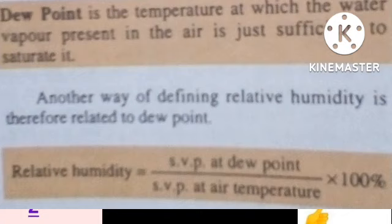These are concepts you need to understand before talking about relative humidity, which deals with the phenomenon that gases go through. Relative humidity is the ratio of the mass of water vapor present in a certain volume of air to the mass of water required to saturate it at the same temperature. Dew point is the temperature at which the water vapor present in the air is just sufficient to saturate it. Relative humidity can also be defined in terms of dew point: it equals the saturated vapor pressure at dew point divided by the saturated vapor pressure at the current temperature, times 100%.